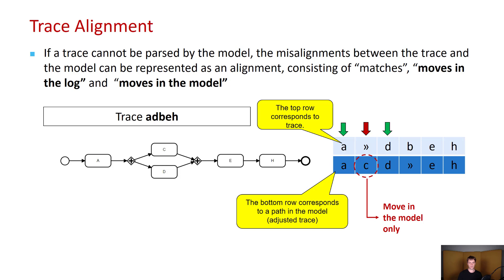With D, we can see it occurs both in the trace, in the correct place, and also in the model. So this is again a move in both or a match. When it comes to B, then this occurs in the trace, but never occurs in the model. So this is a move in log only. E is again fine, and H is fine.